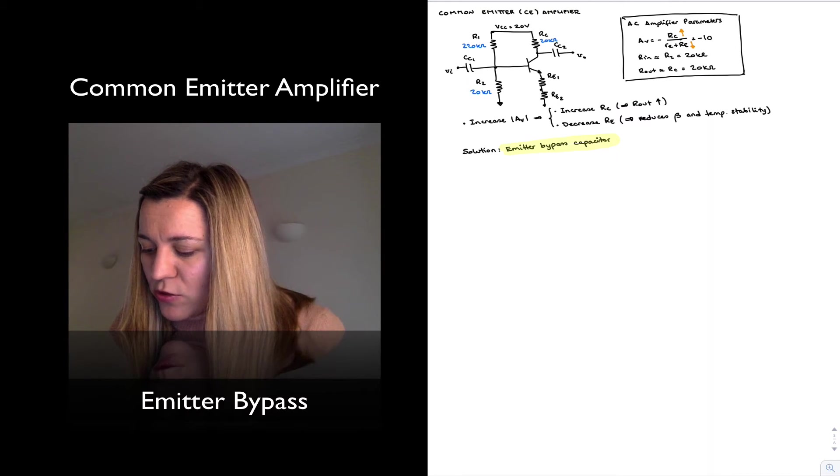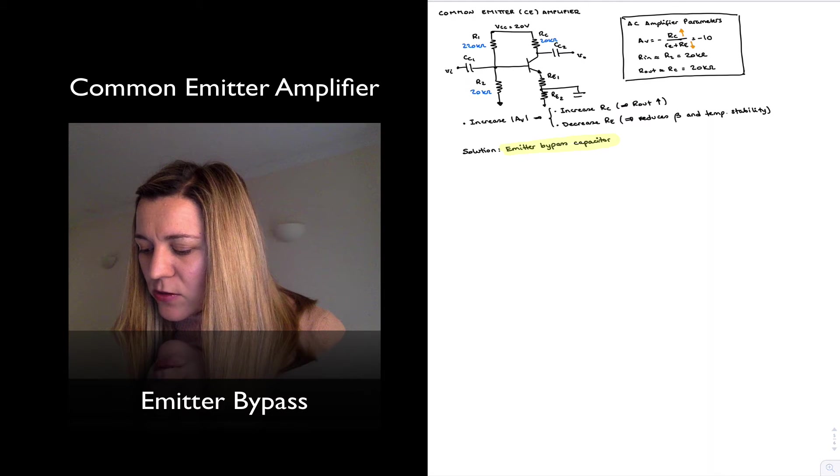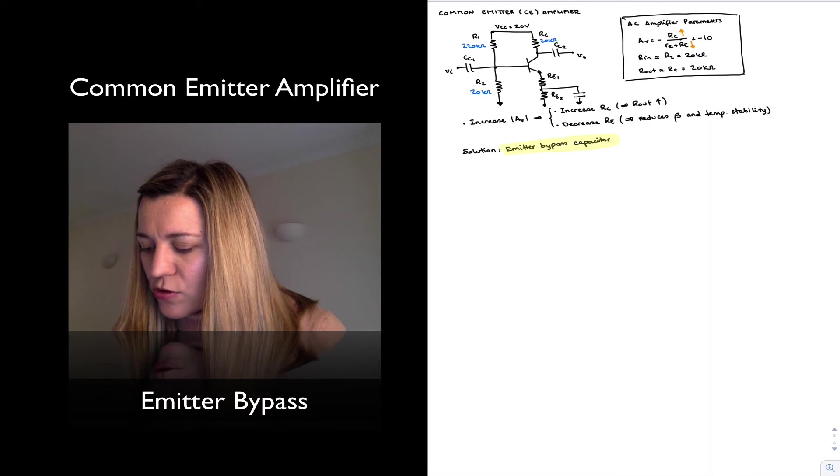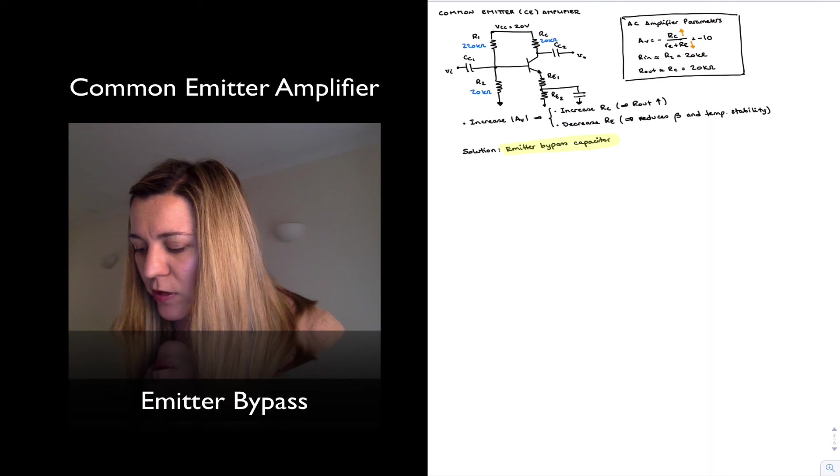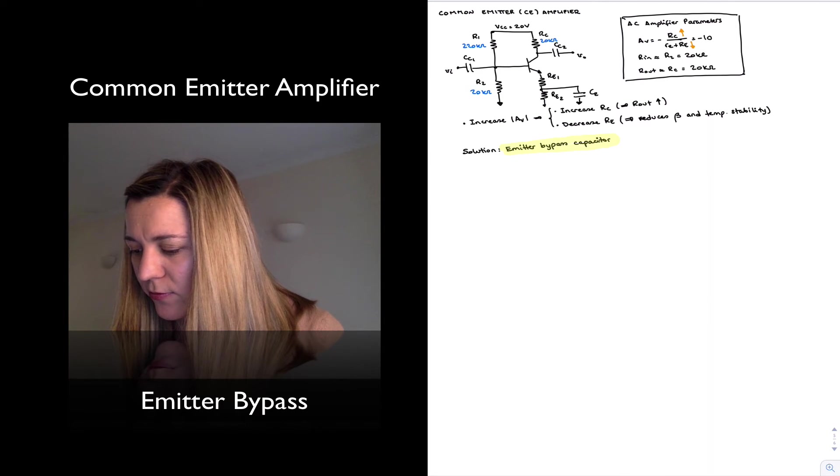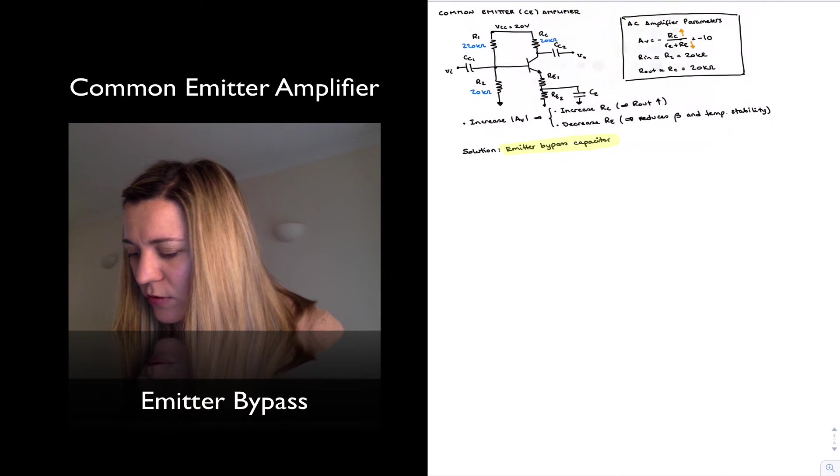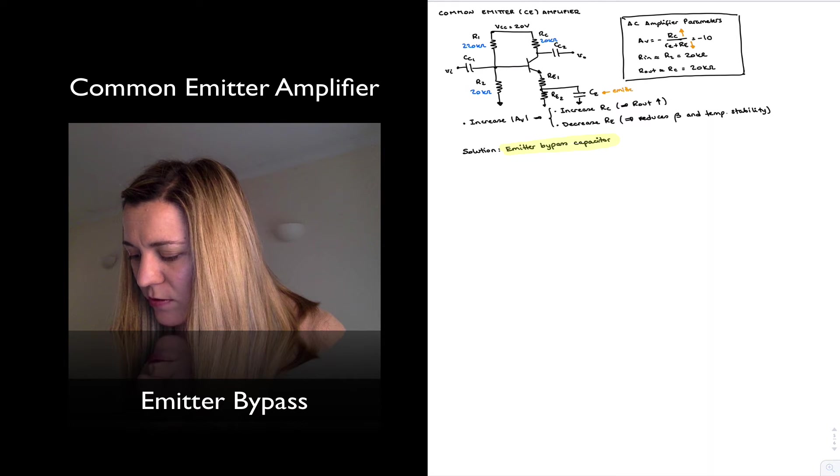Now, I'm going to introduce a bypass capacitor across RE2. I'm going to label it CE. And I'm going to call this my emitter bypass cap.